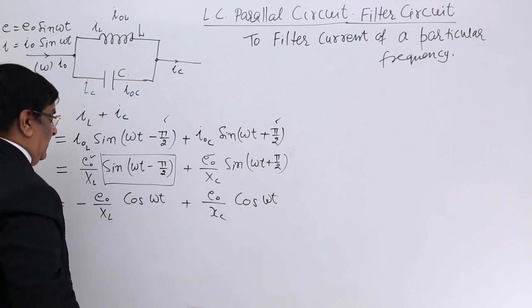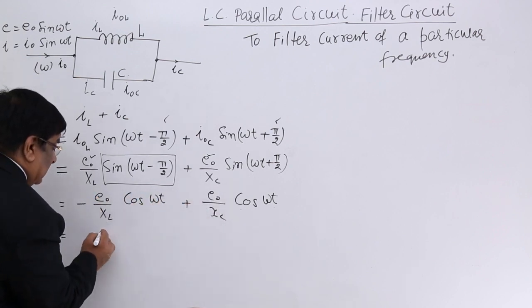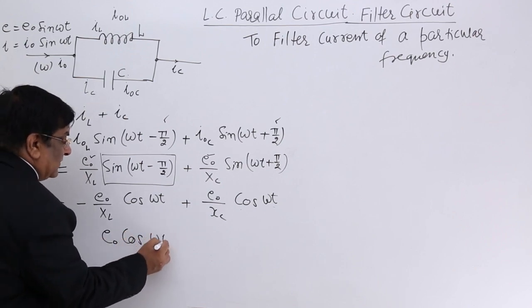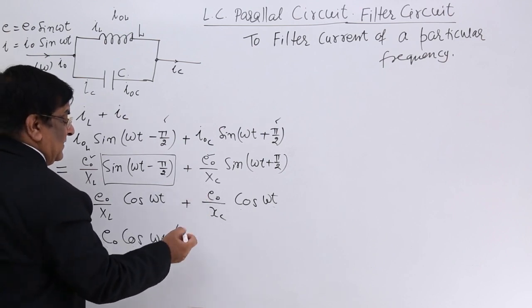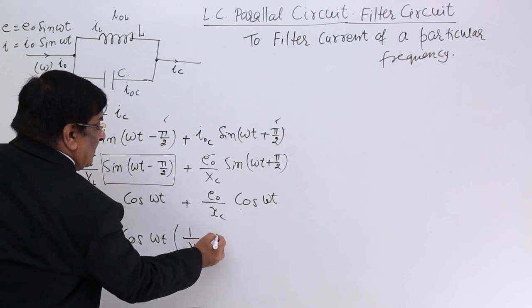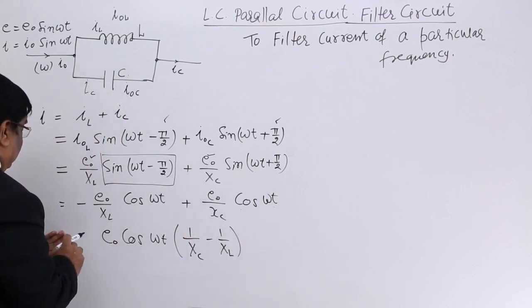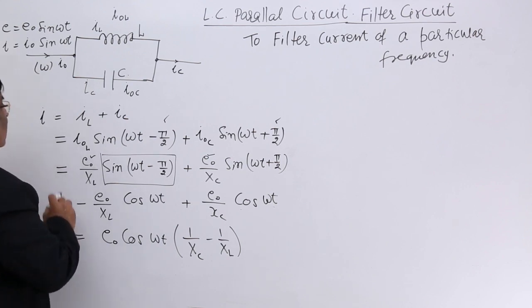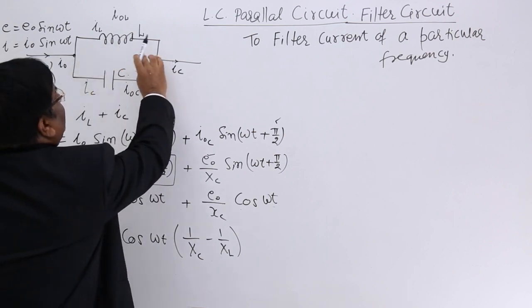So it is converted to this expression and here sin(π/2 + ωt) is again cos ωt. So it is converted to this expression. Now you see E₀ cos ωt is a common factor of the two. E₀ cos ωt and what we have inside, I will write the positive term first, 1 upon XC minus 1 upon XL. So this is simplified equation for the current, this current which is passing through and coming here.